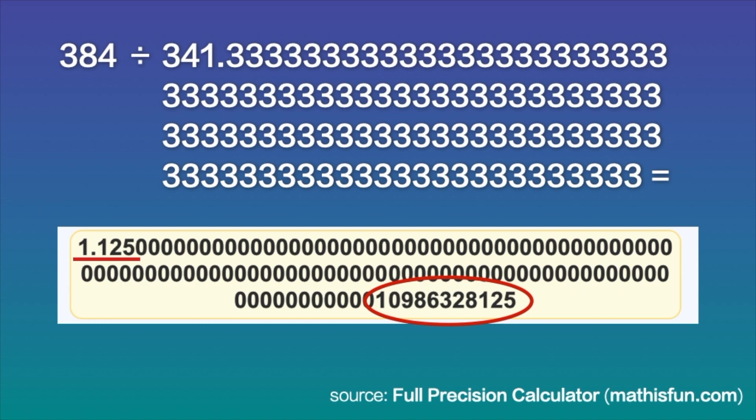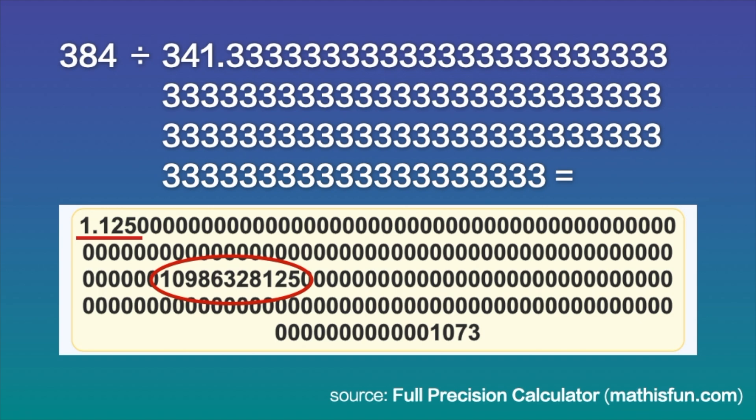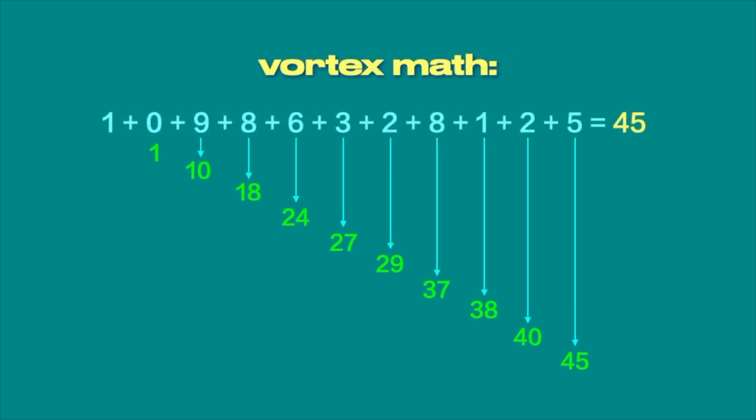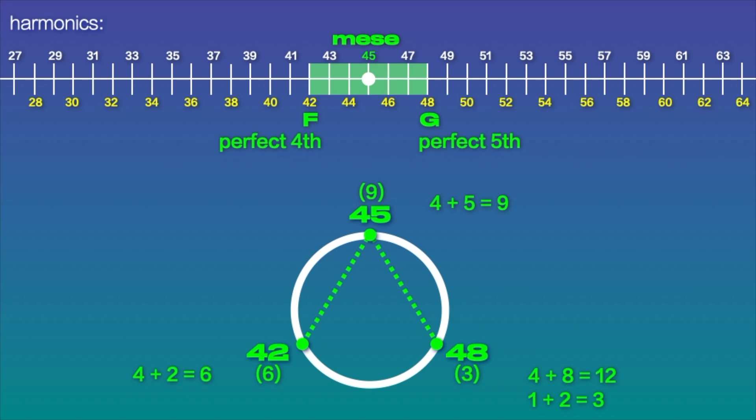This strange number isn't just randomly showing up at the end of this long decimal. If we divide 384 by 341 with only 95 threes, the strange number shows up again, but earlier. The basics of the strange number are that its value reduces down, using vortex math, to a value of 45, which again reduces to 9. The 45 speaks directly to the relationship of the perfect fourth to the perfect fifth. And 45 sits at the Mi's position between F at harmonic 42 and G at harmonic 48. But what's most noticeable here is that the arrangement of 42, 45, and 48 fits perfectly into the 369 system on the Mobius circuit, with G's value of 48 reducing to 3, F's value of 42 reducing to 6, and the value of 45 reducing to 9.